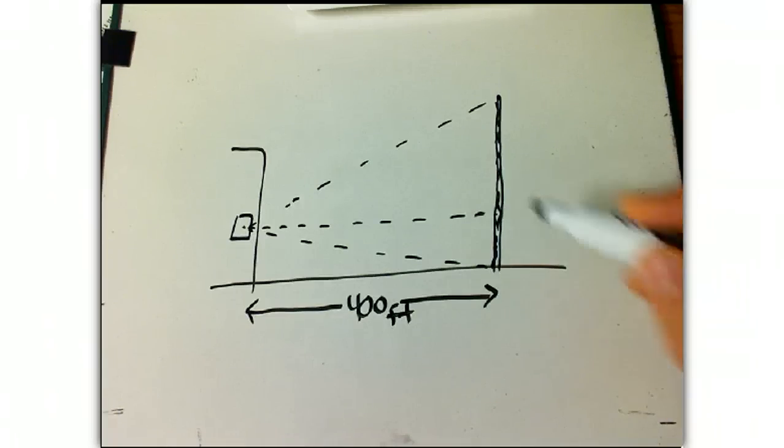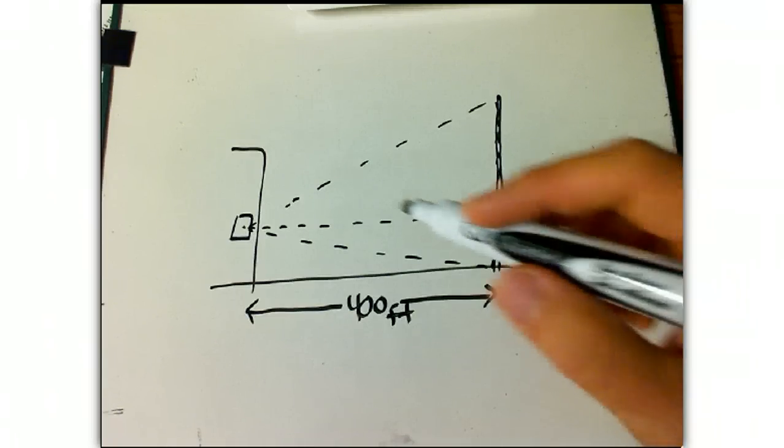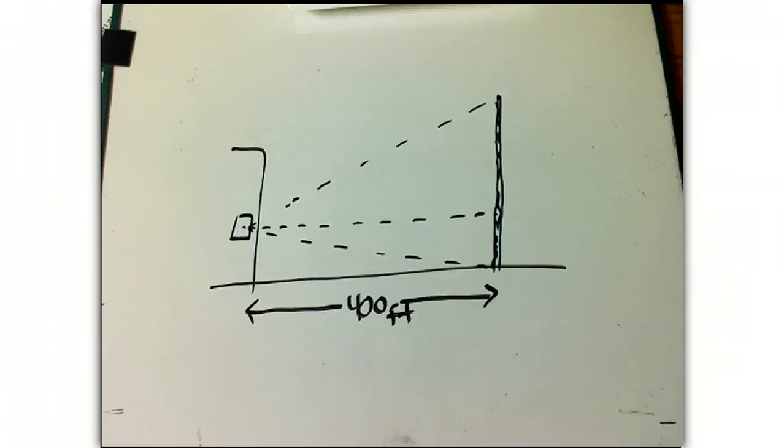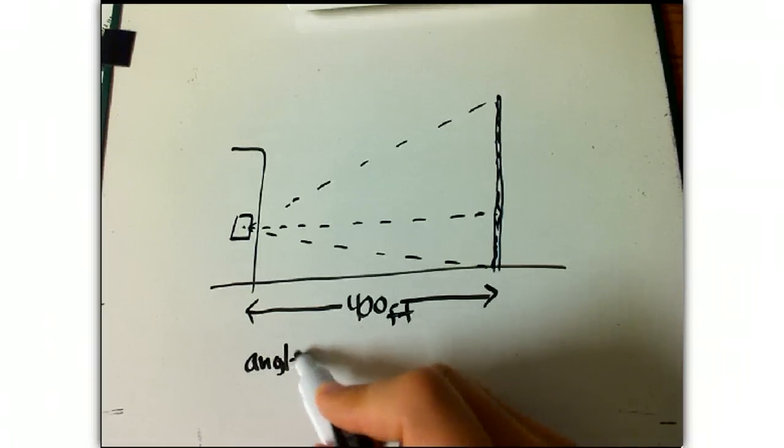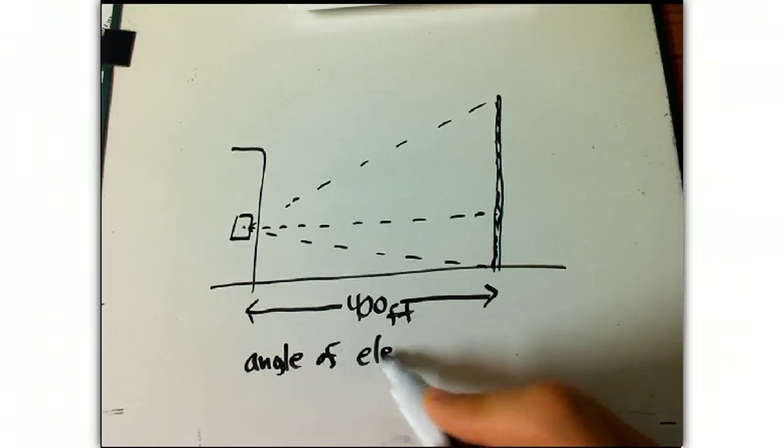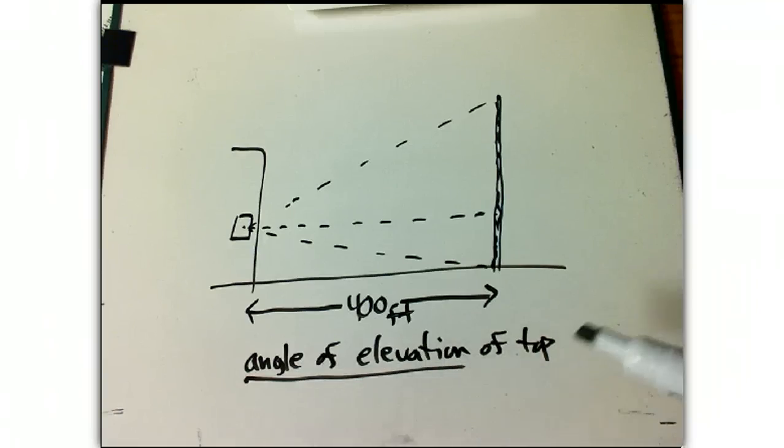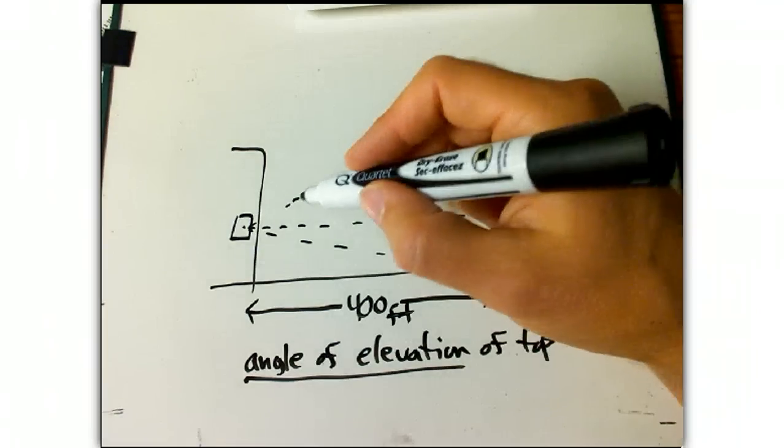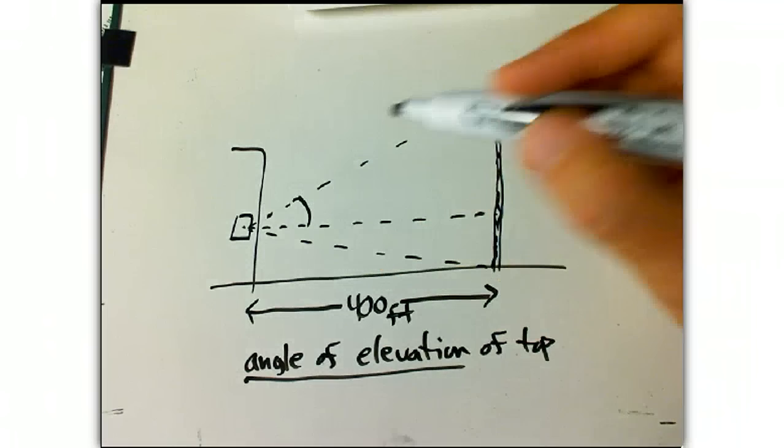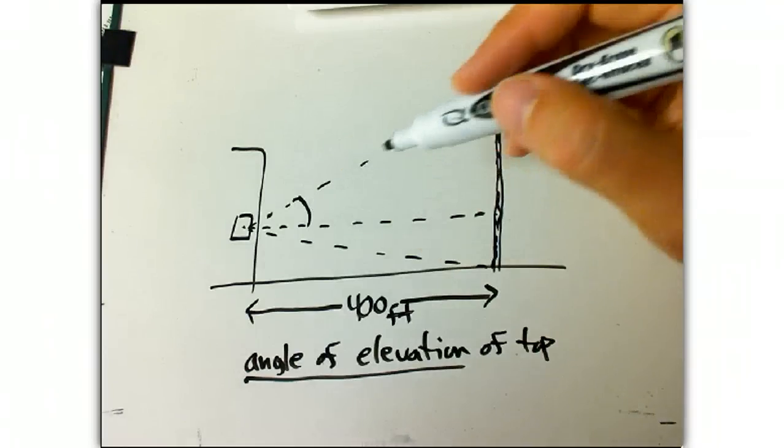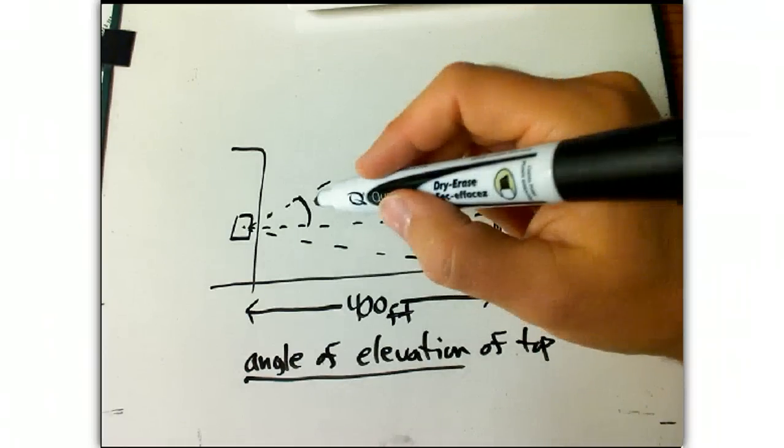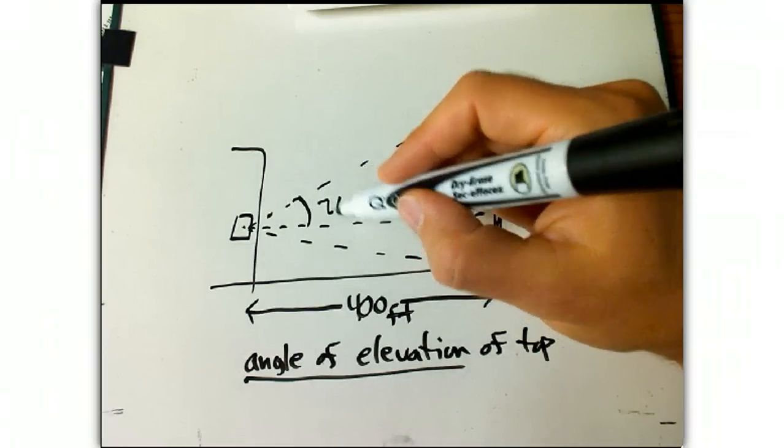We calculate the angle of elevation of the top of the tower, and that's an important precise phrase. Angle of elevation means angle up measured from the horizontal. As we see the top of the tower, let's say we see this at 28 degrees.